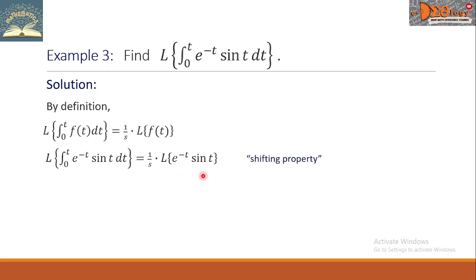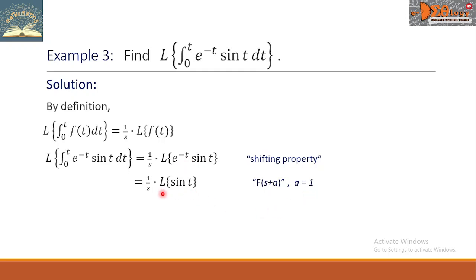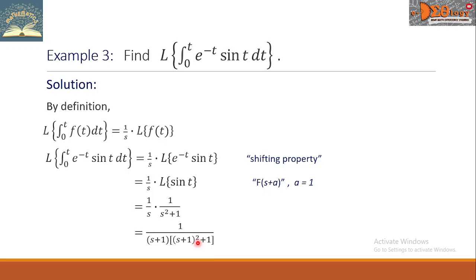This problem uses the shifting property of Laplace transforms. We first take the Laplace transform of sine t, which gives 1 over s squared plus 1. Then, since a equals 1 (the coefficient in the exponent of e raised to negative t), we apply the shifting property by replacing all s with s plus 1. The final answer is 1 over (s plus 1) squared plus 1, multiplied by the 1 over s factor, giving 1 over s times the quantity (s plus 1) squared plus 1.